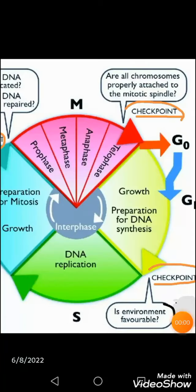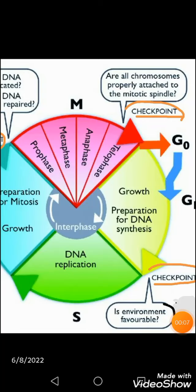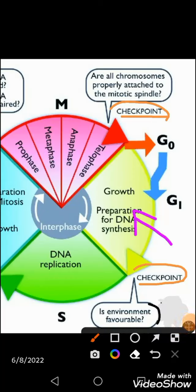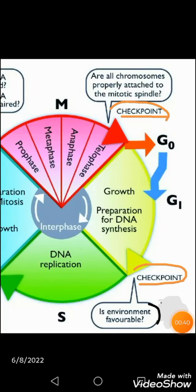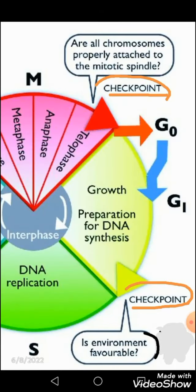Now let's learn the phases of interphase individually. The G1 phase, or Gap 1 phase, is where the cell produces more organelles and synthesizes more proteins and enzymes, and repairs damaged structures using thymidine dimers. So here, synthesis of RNA and protein takes place along with the production of organelles and various enzymes.